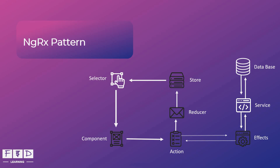To summarize, in NGRX the state management lifecycle starts with an action being dispatched from the component, which triggers a reducer to update the state based on that action. The updated state is then stored in the store — a centralized storage for the application state. Components use selectors to retrieve the necessary state from the store and update their UI accordingly. Effects handle side effects like API calls, ensuring a predictable and scalable state management process. This lifecycle ensures that state changes are predictable, making it easier to manage complex applications and debug issues.